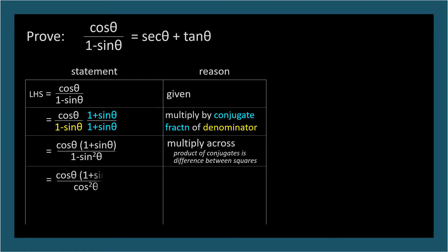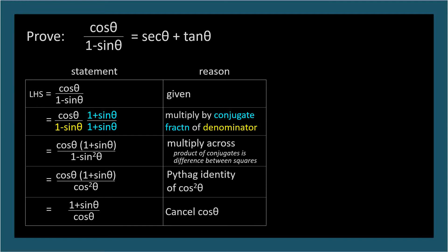Now we can substitute cosine squared theta for 1 minus sine squared theta by the Pythagorean identity of cosine squared theta. Let's cancel cosine theta from the numerator and denominator. Now we have two terms in the numerator and one in the denominator, so we can split the fraction in two.